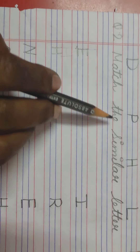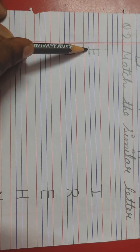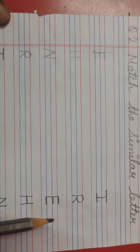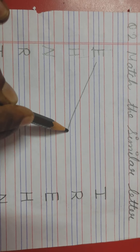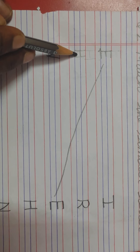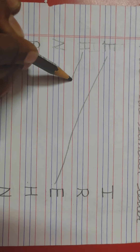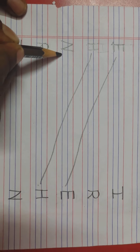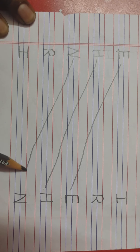Going to the other question — match the similar letters. You have to match the same letters. Here letter E is there; you should find out the same letter E and match letter E with this letter E. Second, letter H — here H is there, you have to find out and match the letter H with another letter H. Same way, letter N is there; you have to match the letter N with another letter N.